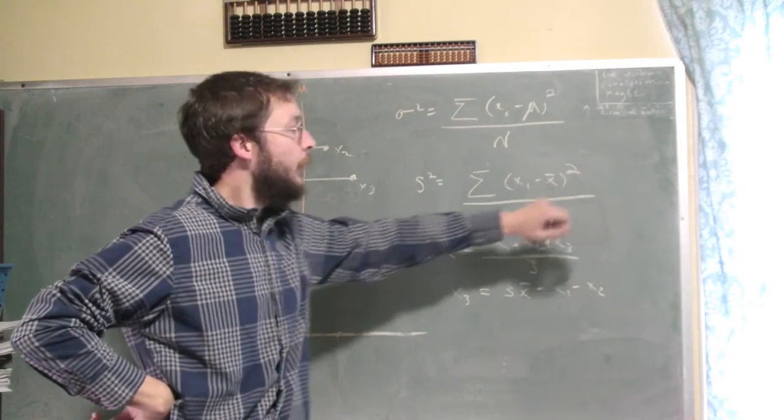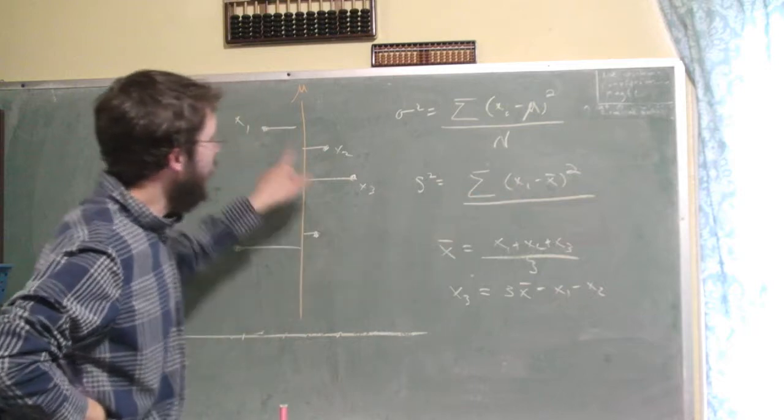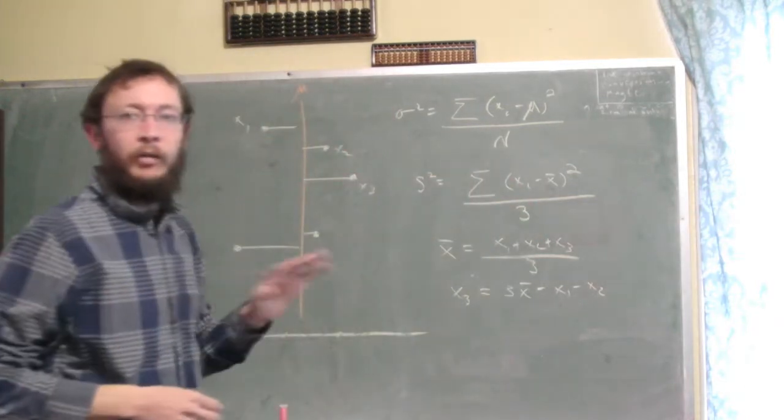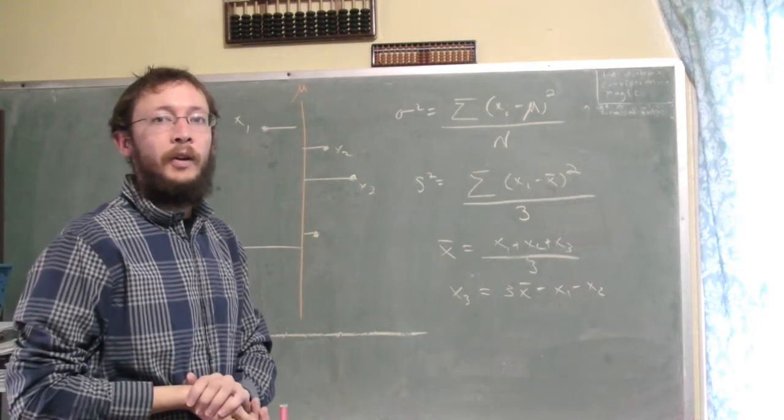That gives us the squared distance, and how many data points do we have? We have three, and so you might think, oh, okay, we're just averaging relative to those variables, those three variables, right?